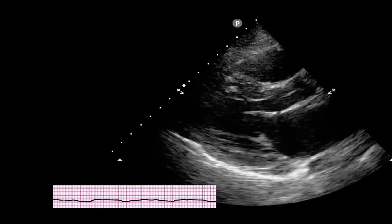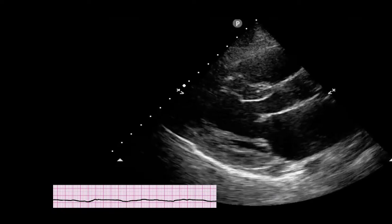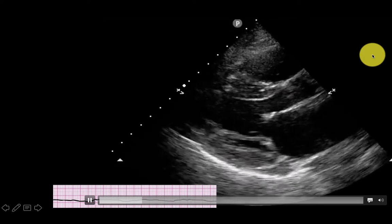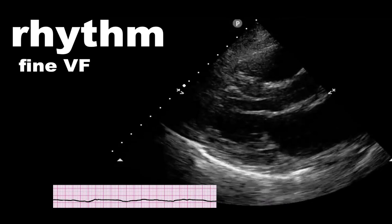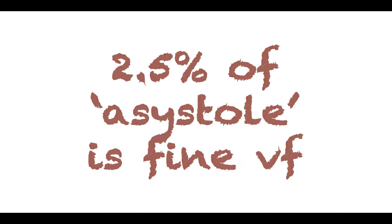And then last is a case of this: a rhythm strip reading asystole. When you're actually looking at the LV walls themselves, you see that they're moving in a very fine fashion. This is actually fine V-fib, and this patient needs to be shocked. Just an FYI — 2.5% of asystole is actually fine V-fib. So use ultrasound in each and every arrest to help guide your management.